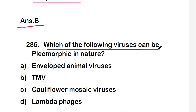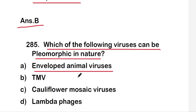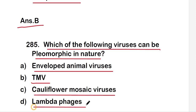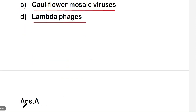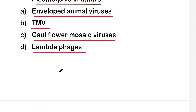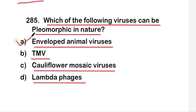Next question: which of the following viruses can be pleomorphic in nature? Options are enveloped animal virus, TMV, cauliflower mosaic virus, or lambda phages. The right answer is option A, enveloped animal viruses. Enveloped animal viruses can be pleomorphic in nature.